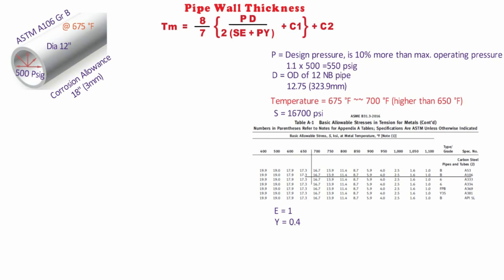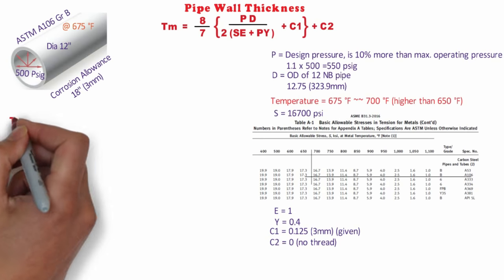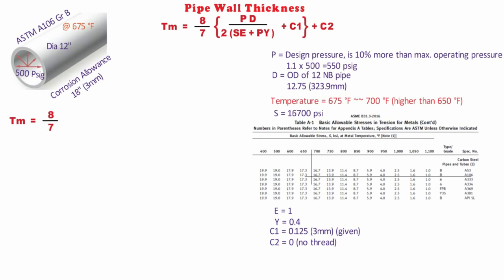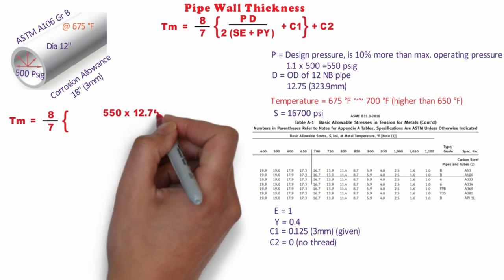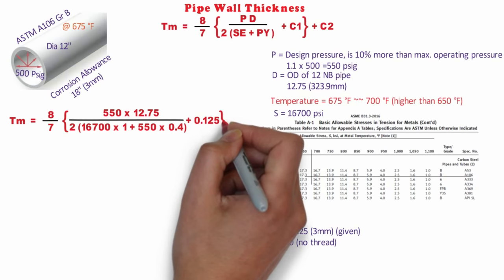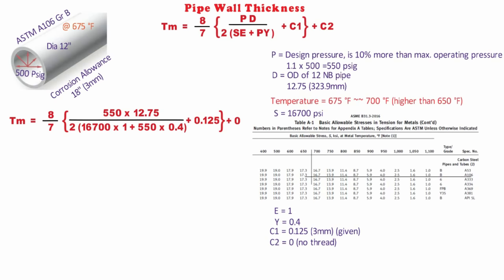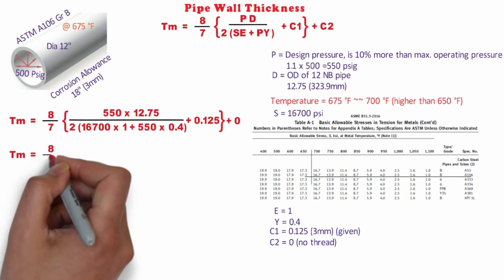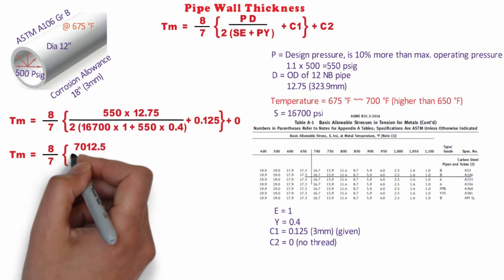These values can be calculated or derived from the tables given. c1 = 0.125 inches (3 mm) - this is a given value. c2 = 0 since the line is greater than 2 inches. Now let's calculate tm. As you can see on your screen, tm = (550 × 12.75) / (2 × 16,700 × 1 + 550 × 0.4) + 0.125, which becomes 7,012.5 / 33,840 = 0.3322.